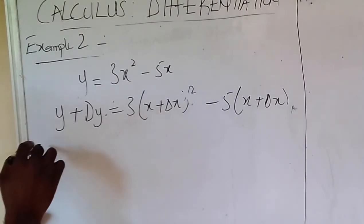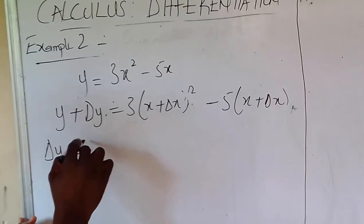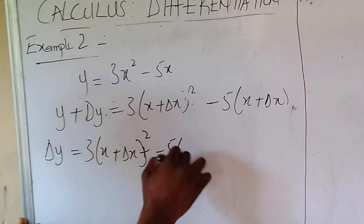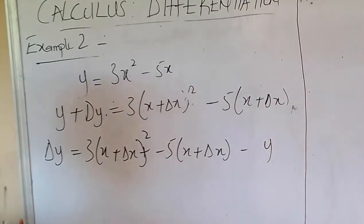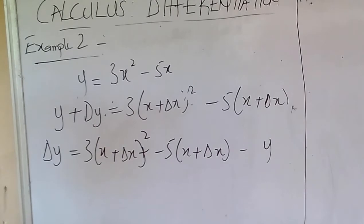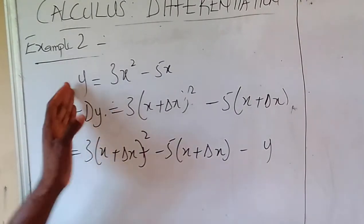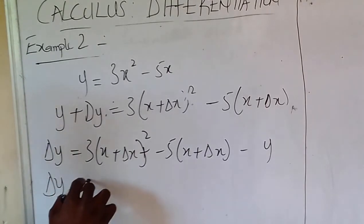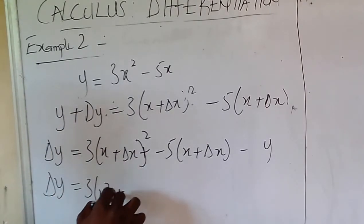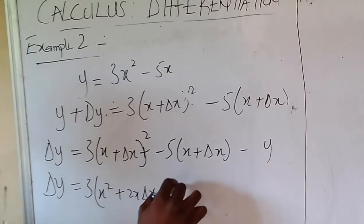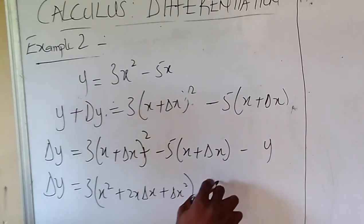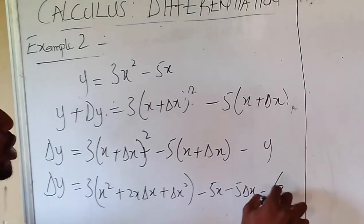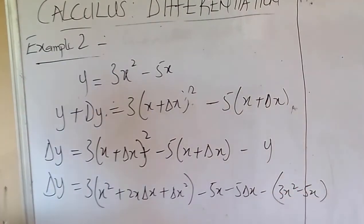The second step is to subtract y from both sides, giving: θy equals 3 times x plus θx, all squared, minus 5 times x plus θx, minus y. Expanding: θy equals 3 times x squared plus 2x·θx plus θx squared, minus 5x minus 5·θx, minus y. Substituting y equals 3x squared minus 5x on the right-hand side.